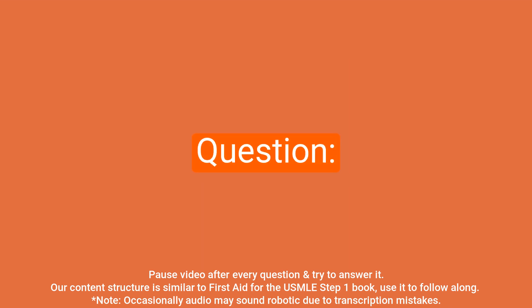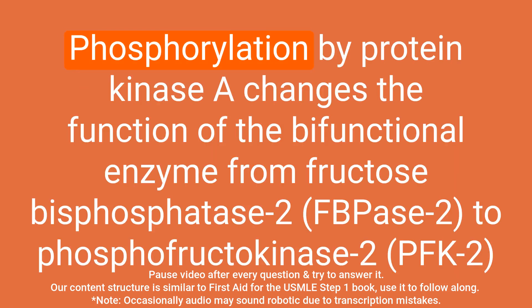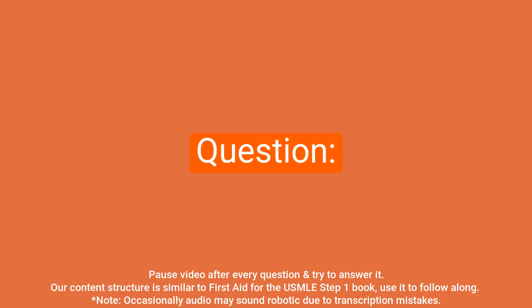Question: How does phosphorylation by protein kinase A change the function of the bifunctional enzyme? Answer: Phosphorylation by protein kinase A changes the function of the bifunctional enzyme from fructose bisphosphatase-2 to phosphofructokinase-2.